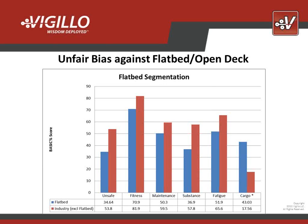Across the board, if you look at all six basics — unsafe, fitness, maintenance, substance abuse, and fatigue — in each case the blue bar representing the flatbed segment is significantly better in CSA scores than the rest of the industry. That was very interesting and surprising. But you can see that last bar on cargo violations — flatbed operators are very significantly worse performers when it comes to cargo. That was the unfair bias the FMCSA intended to address. We can now validate with data that the unfair bias did exist.